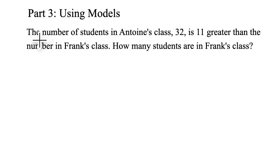Now let's practice not only writing the models but also using them. The number of students in Antoine's class, 32, is 11 greater than the number in Frank's class. How many students are in Frank's class? We already know the number of students in Antoine's class is 32. It says 32 is, or in other words, 32 equals. 11 greater than the number in Frank's class. Let's have x be the number in Frank's class, and this 32 is 11 greater than that. So that would be the number in Frank's class plus 11. So the number in Antoine's class is 11 greater than the number in Frank's class. We'll solve our equation and figure out that Frank's class has 21 people in it.